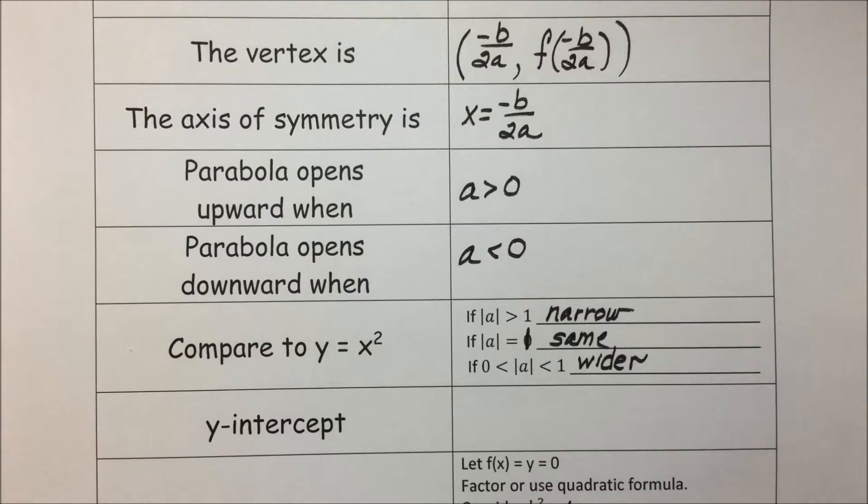For a y-intercept, we let x equal 0, and when we let x equal 0 in our equation, we end up with c for our value, so the point of the y-intercept is at the coordinate (0, c).